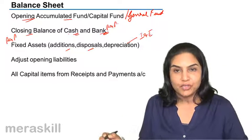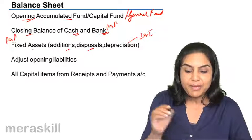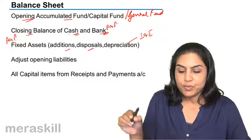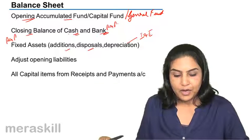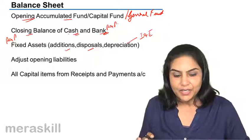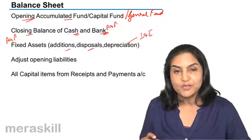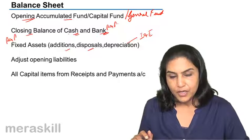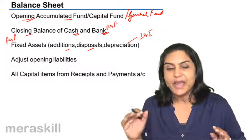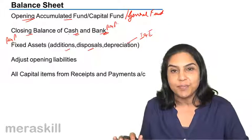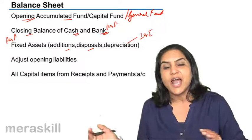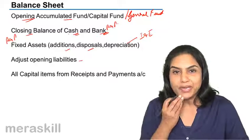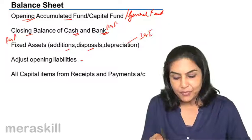We have the closing balance of cash and the closing balance of bank from the receipts and payments. We get fixed assets, additions, disposals, and so on. From the opening balance sheet, we have opening liabilities. Through the receipts and payments account, we know the adjustments to those opening liabilities. For example, subscription received in advance — if that subscription relates to the current year, it would be adjusted. The portion relating to the current year is taken to the income and expenditure account, and the balance still in advance is carried forward to the closing balance sheet. Similarly, opening creditors, other liabilities, and loans to be repaid — depending on the cash flow, these are adjusted to find their closing balances.